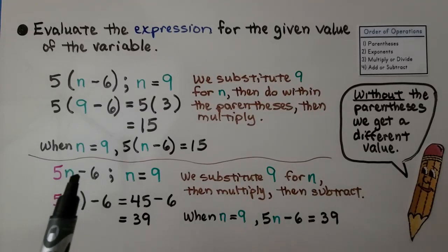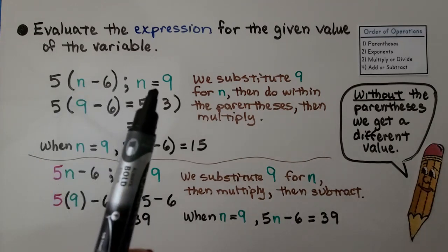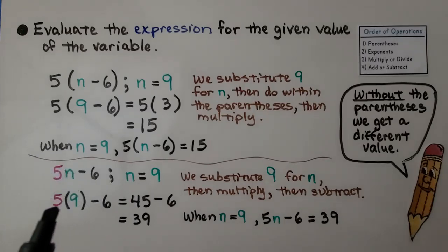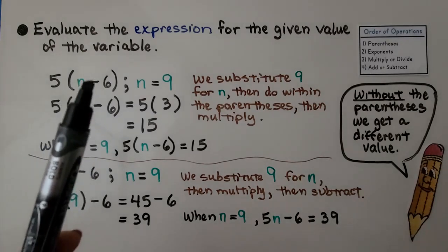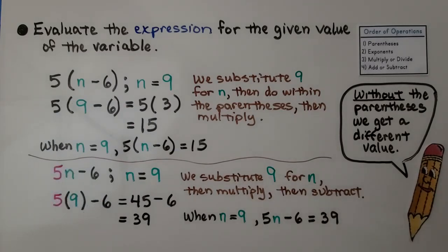Now we have 5n minus 6 — it looks almost exactly like the previous one except there are no parentheses, and n is still equal to 9. Since 5 is next to n, we multiply 5 times 9 first, which equals 45. Then we subtract: 45 minus 6 is 39. So when n equals 9, 5n − 6 equals 39. Without the parentheses we get a completely different answer — the parentheses changed the order we performed the operations.